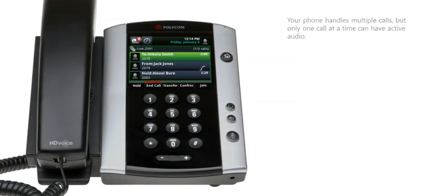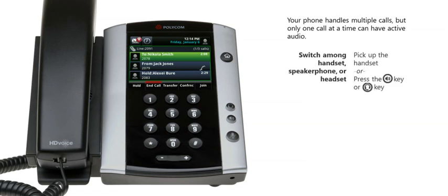The Polycom VVX500 can handle multiple calls at a time. However, only one call at a time can have active audio. Additional calls in the queue may be incoming or held. Your administrator can set up the phone to have as many as 12 lines with unique extension numbers, or the same extension number as other lines. Depending on the way you prefer to work, you may place and answer calls using the handset, speakerphone, or a headset. During a call, you can alternate between these three methods.